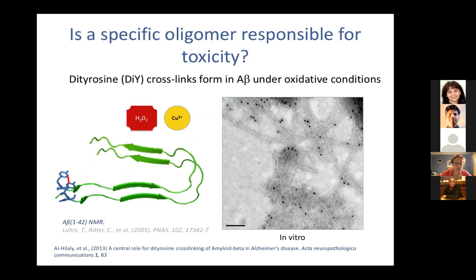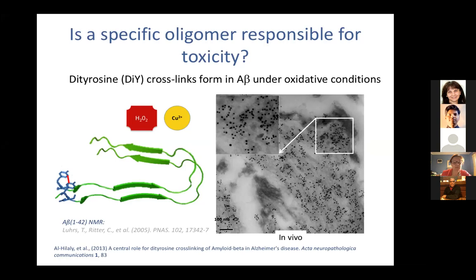At this point we know that oligomeric Abeta is toxic — which you might say we knew anyway. So now we want to see if it's a specific oligomer responsible for toxicity. This part of the talk is really something of an accident. We have been looking at dityrosine formation: Abeta can form dityrosine in an environment with oxidative stress, forming a cross-linked species. We can see those using an immunogold antibody against dityrosine, and we can also see dityrosine cross-links in amyloid plaques in vivo, suggesting this may play an important role in pathology.